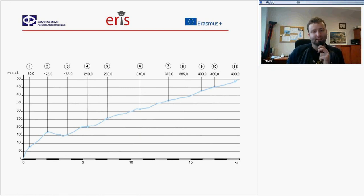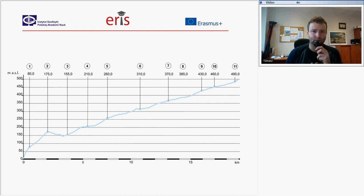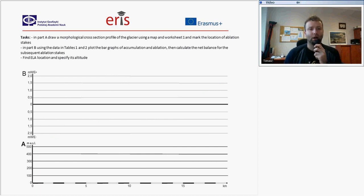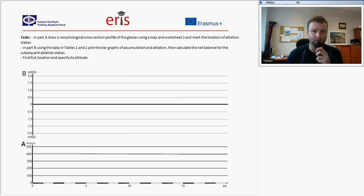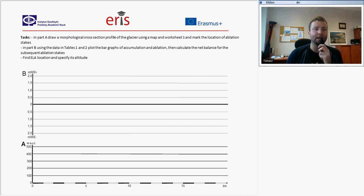If you prepare a profile along the glacier, you will have information about the elevation of the glacier's surface. You will need to draw a morphological cross-section profile — follow the instructions, it should be straightforward. In Part B, you are asked to use the data included in Tables 1 and 2 to plot bar graphs of accumulation and ablation, and to calculate the net balance for the subsequent ablation stakes.